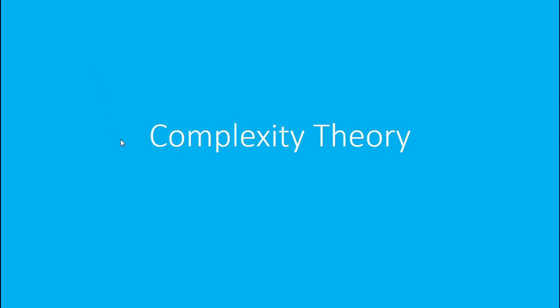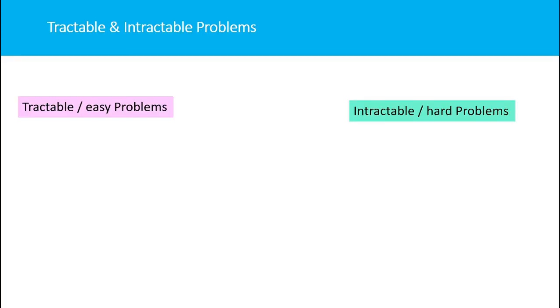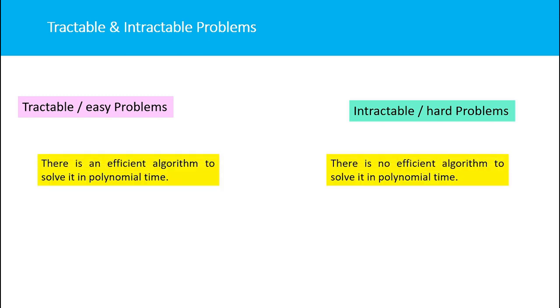In complexity theory, we first discuss different classes of problems. The first distinction is between tractable and intractable problems. Tractable problems are called easy problems — if there exists a polynomial or efficient algorithm to solve that problem in polynomial time, it is called a tractable problem. Intractable problems are hard problems, meaning there is no efficient algorithm to solve them in polynomial time.